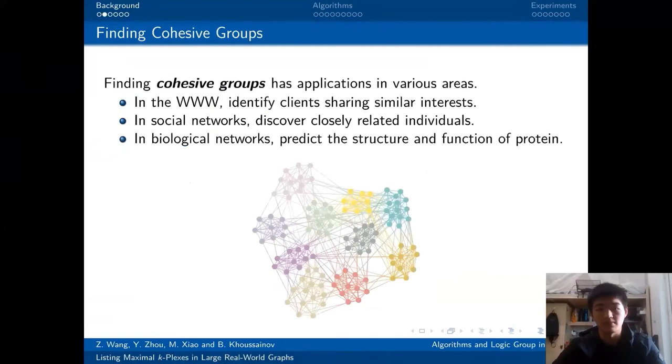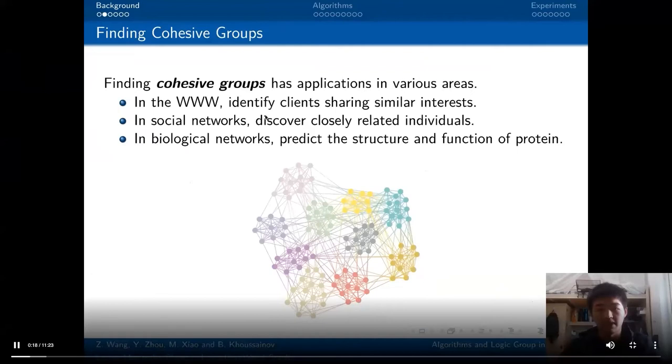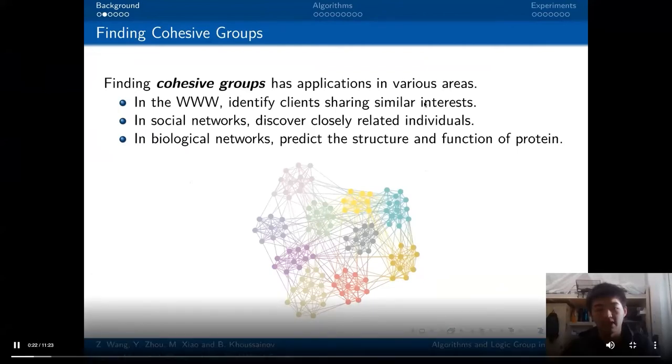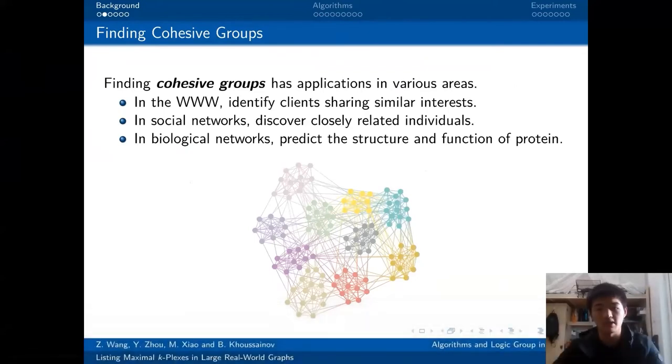The background of our algorithm is finding cohesive groups. Finding cohesive groups has lots of applications in different fields. In the WWW scenario, we can identify clients sharing similar interests and serve them with a common proxy. In social networks, we can discover closely related individuals. In biological networks, we can predict the structure and function of proteins.